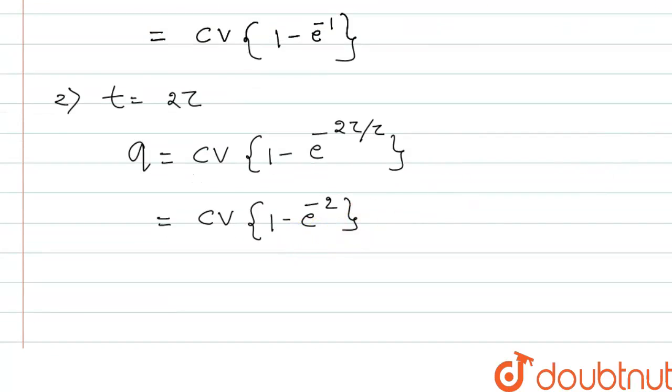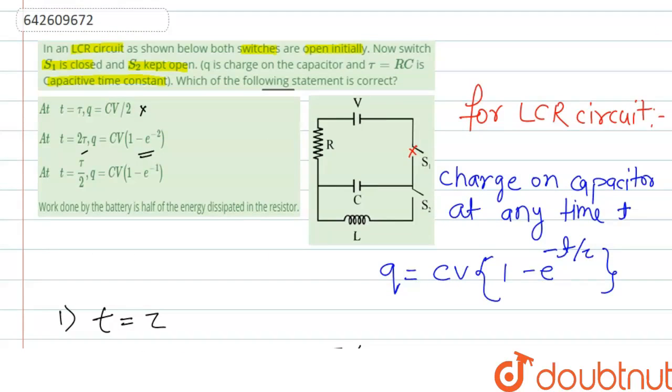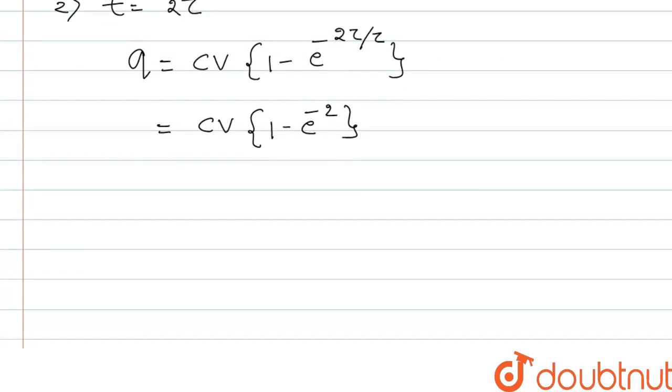So this option is correct. We can write the correct answer is at T equal to 2 tau, Q equal to CV 1 minus e to the power minus 2. Thank you.